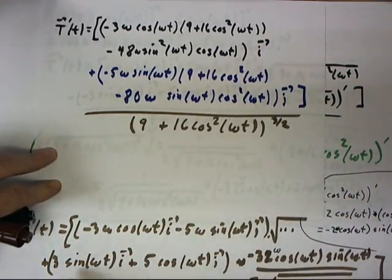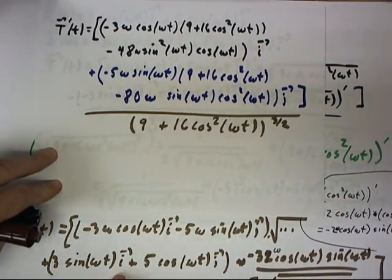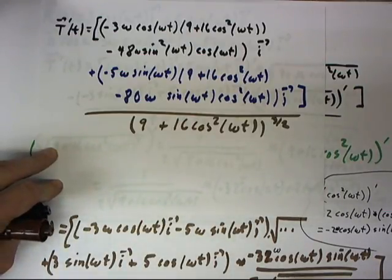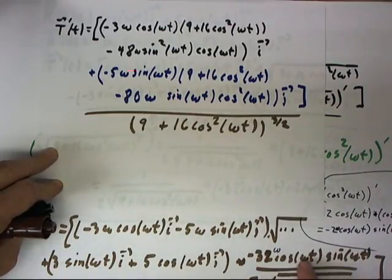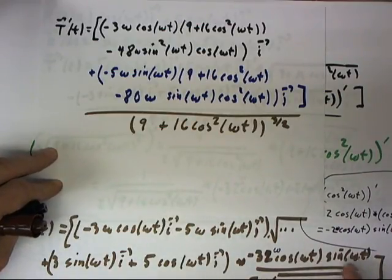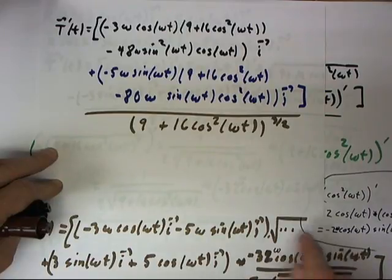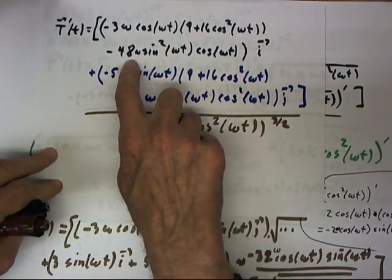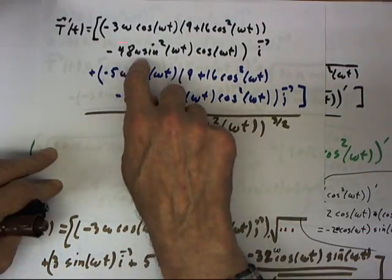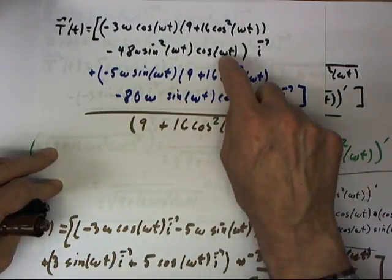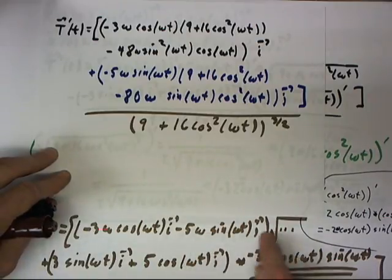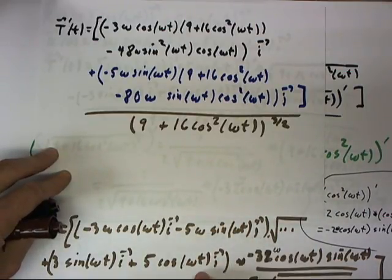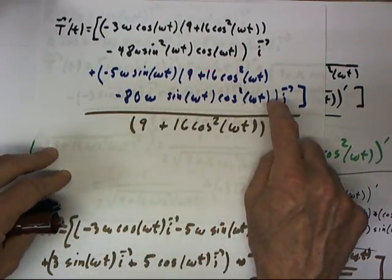And then what's our i component down here? Well, we have 3 sine of omega t times i, and that's going to multiply by now negative 16 omega, cosine of omega t, sine of omega t. We'll have a sine here and a sine here, giving us a sine squared. 3 times negative 16 is negative 48. Our omega comes along, and we do end up with the cosine of omega t. Simplifying the j components similarly gives us the analogous terms.